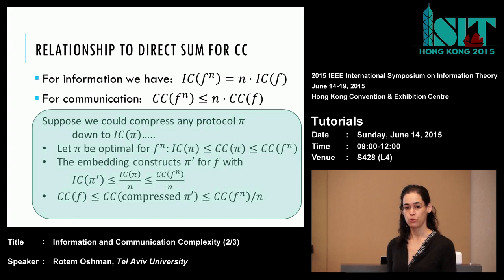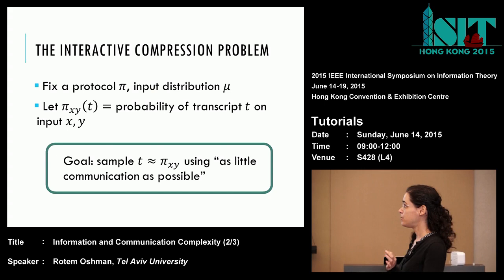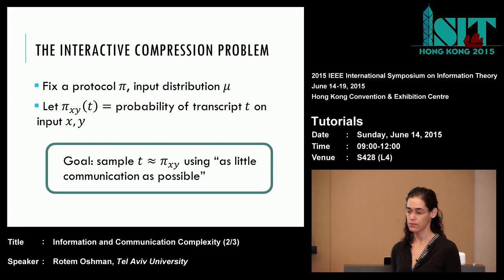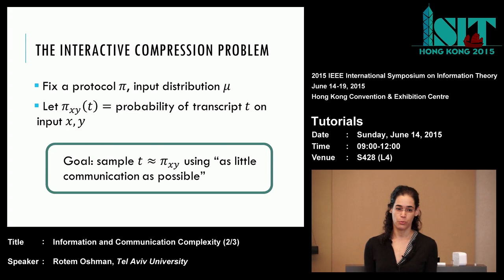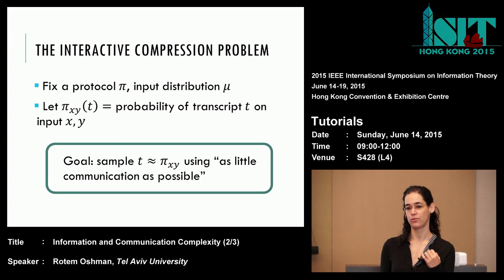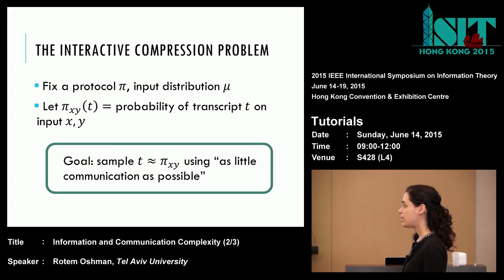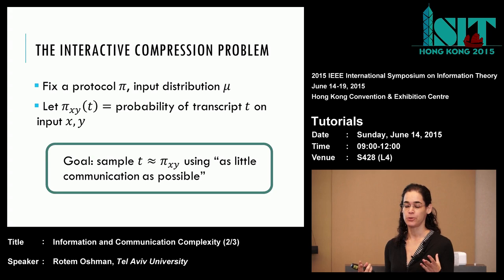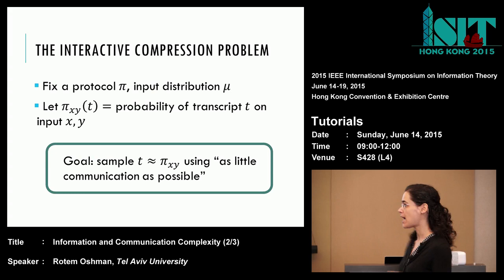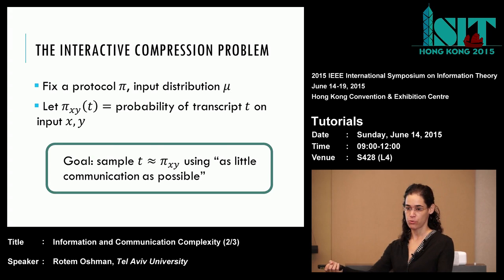To be perfectly formal: the task of compression is — I give you a protocol pi and the distribution on the inputs. Let pi(xy) denote the transcript distribution of this protocol; even when inputs are fixed, there's still randomness in the protocol. I want you to sample transcripts from a distribution close to the correct one in statistical distance, using as little communication as possible — ideally just the information cost. Alice gets x, Bob gets y; they jointly produce transcripts from almost the right distribution without much communication.